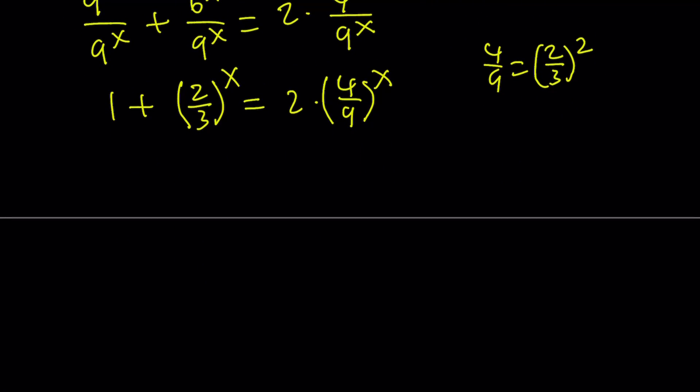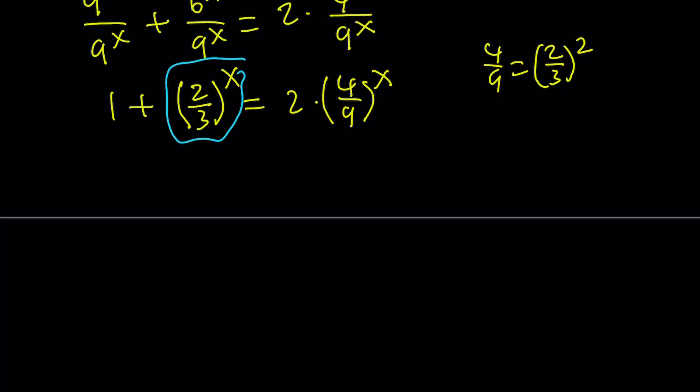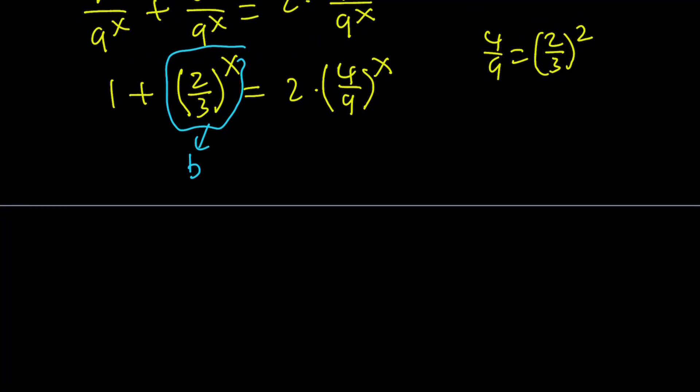All righty. Now, we're going to use substitution. Shouldn't be a surprise. We're going to call this something. How about b? Let's call it b. Last time, I think we called it c. And this time, we're going to call it b. And this is going to give us the following. If that's b, then this should be b squared. So, we get 1 plus b equals 2b squared. 2b or not 2b.